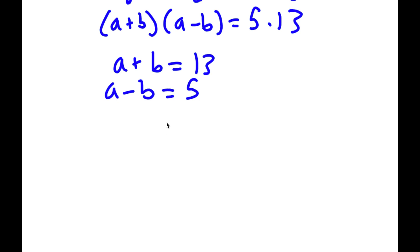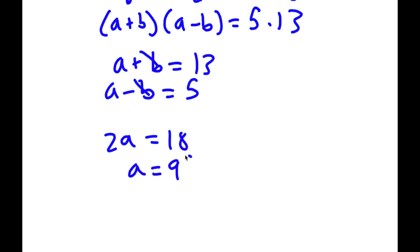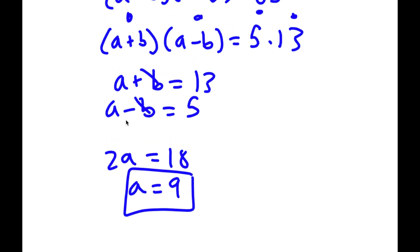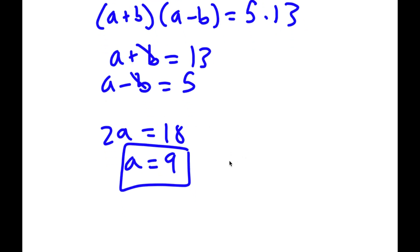So now this is a simple system of equations. These two cancel out, so I get 2a is equal to 18, meaning a is equal to 9. And if a is equal to 9, then b is equal to 4.